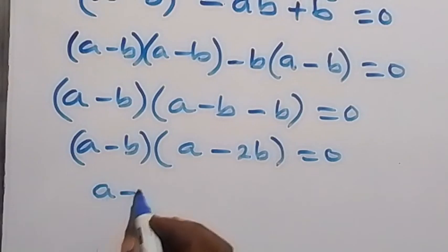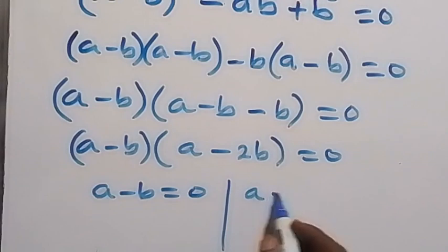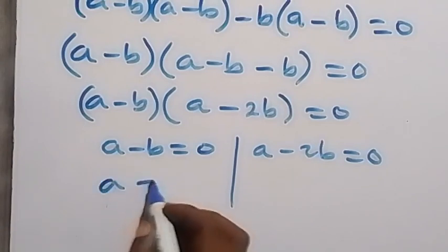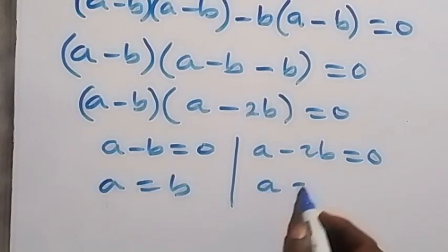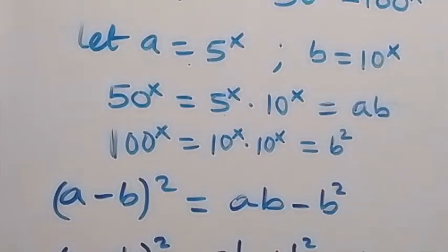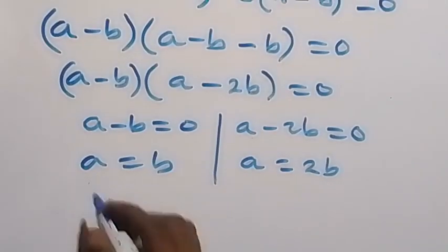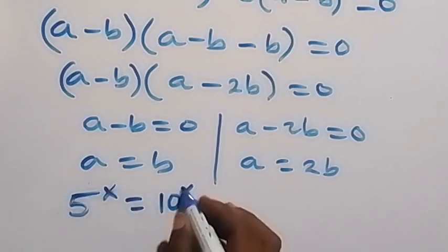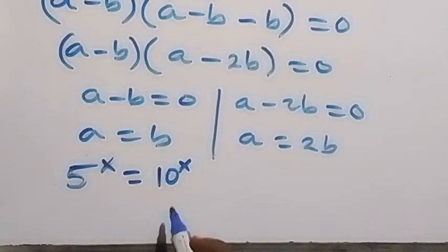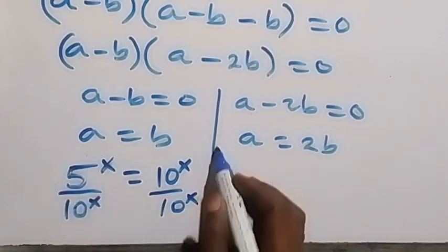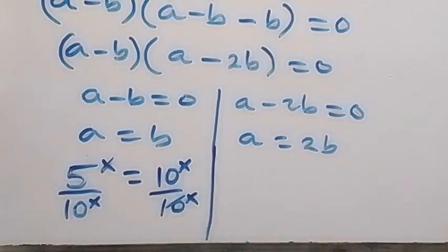We have two cases: a minus b equals zero, or a minus 2b equals zero. From the first case, a equals b. Substituting, 5 raised to power x equals 10 raised to power x. Dividing both sides by 10 raised to power x, we get 5 over 10 raised to power x equals 1.